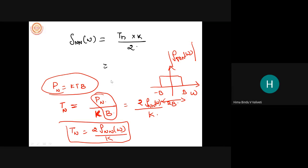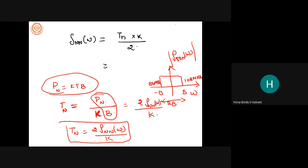We are talking about noise power. Noise power is KTB. When you have an application — suppose you're talking about an FM radio — the radio application is somewhere around 86 MHz to 108 MHz. So the bandwidth of the FM radio is 108 MHz minus 86 MHz, which is 22 MHz allocated for the application.